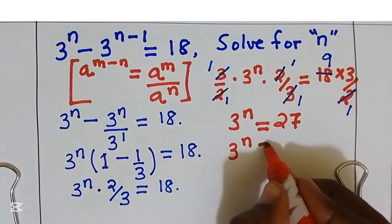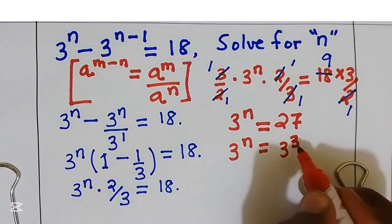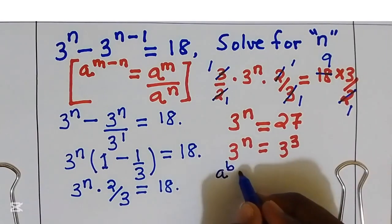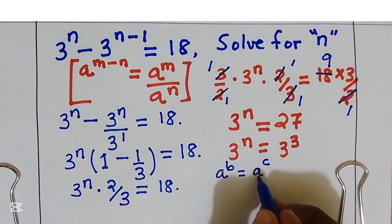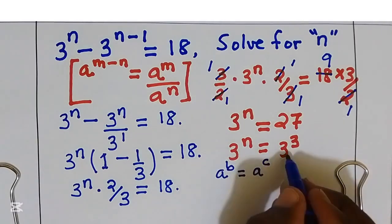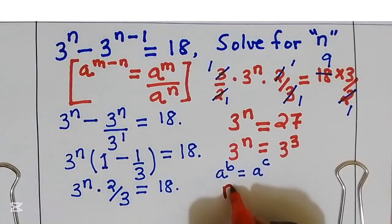3 power n is equal to 27, is the same as 3 power 3. If we have a power b, this is equal to a power c. If the base are the same, exponent are equal. Now the base are the same, n equal to 3. Now n is equal to 3.